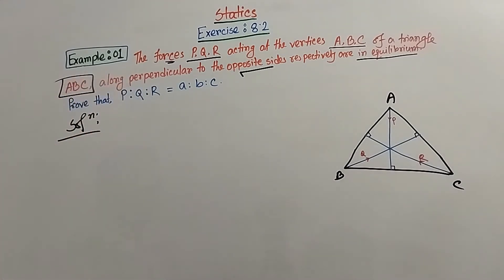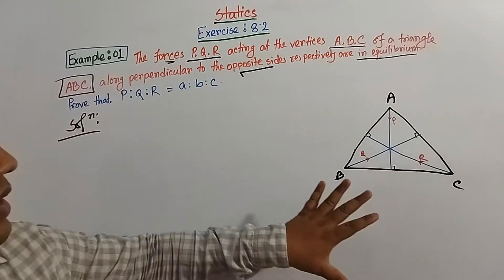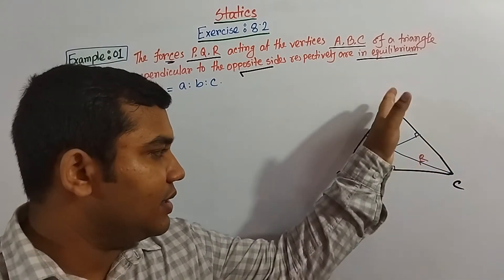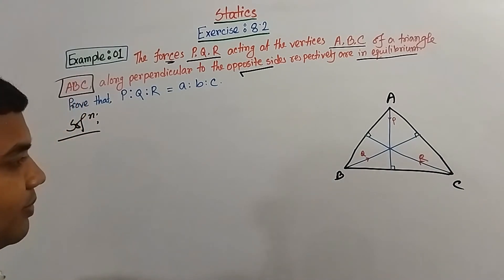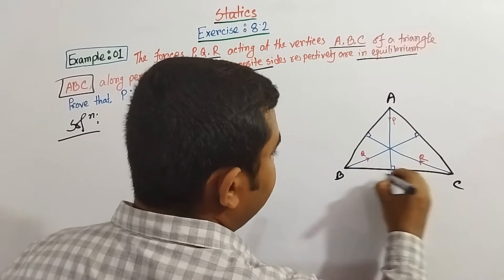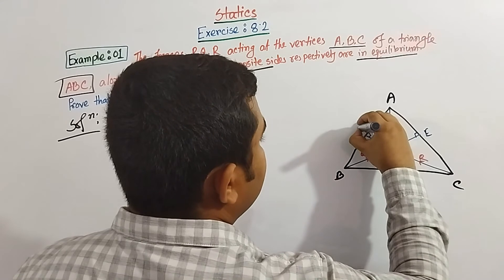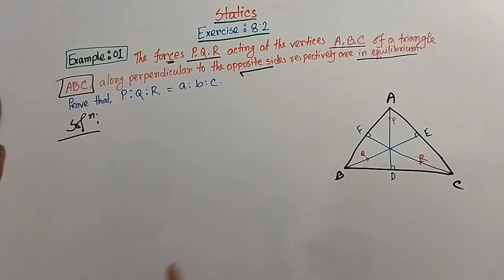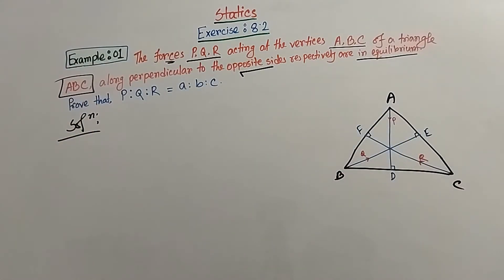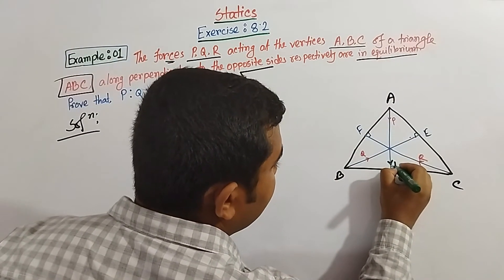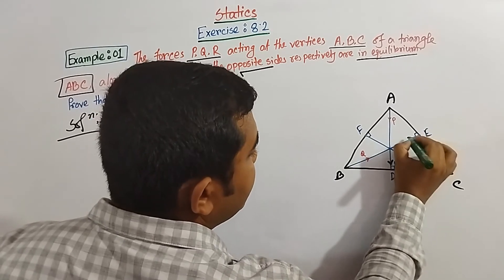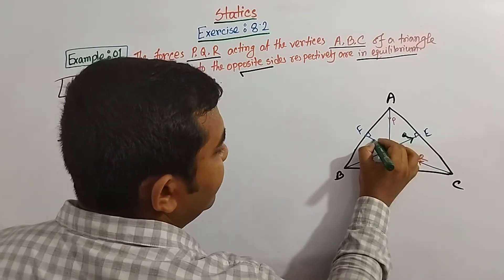Here all three can be denoted by P, Q, and R. Say this is the side where P has been working, here Q has been working, and on that line R has been working. Now, our question says if these are in equilibrium — that means P plus Q plus R equals 0. If that, then P is to Q is to R equals a is to b is to c. We need to prove this. For this, we give names to the foot of the perpendiculars: this is D, E, and F. And the intersection point is O.